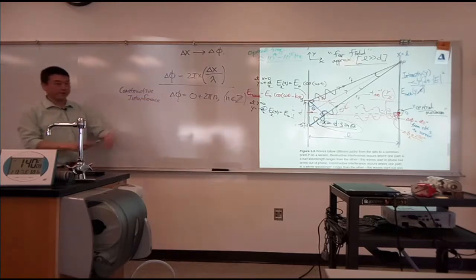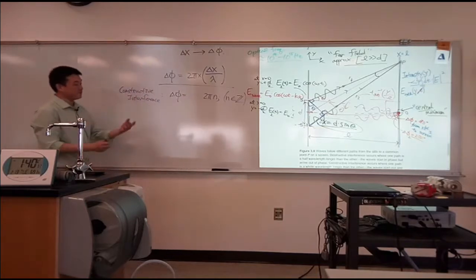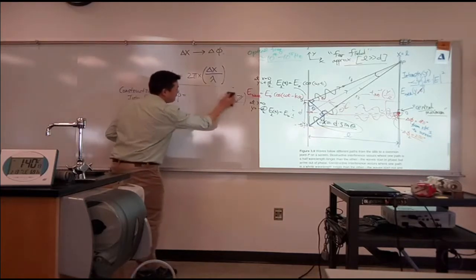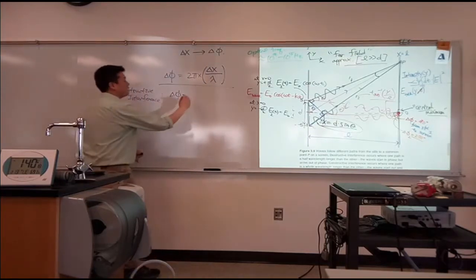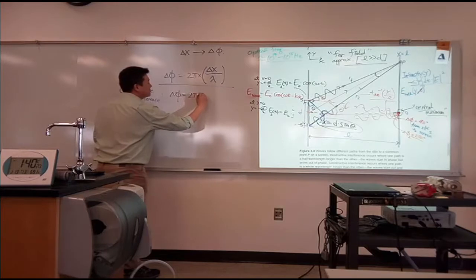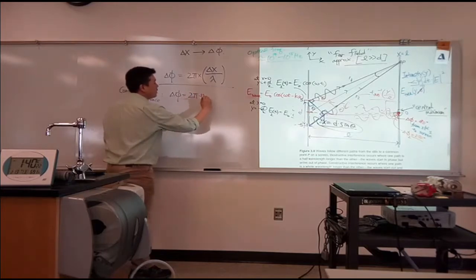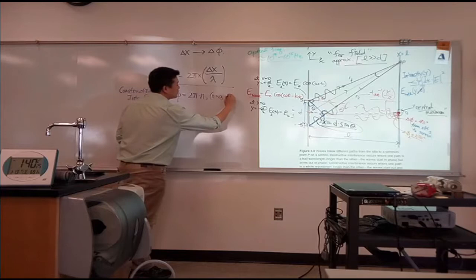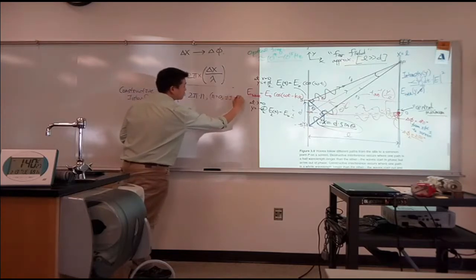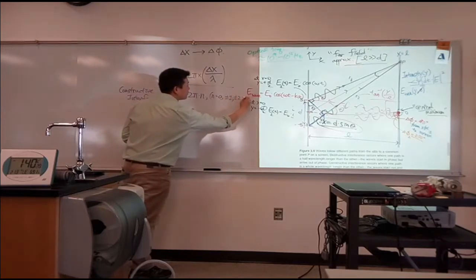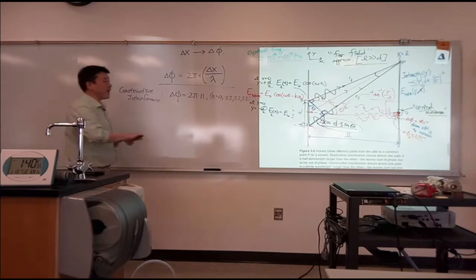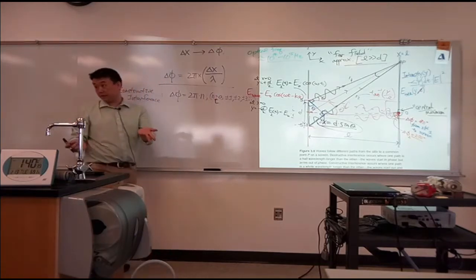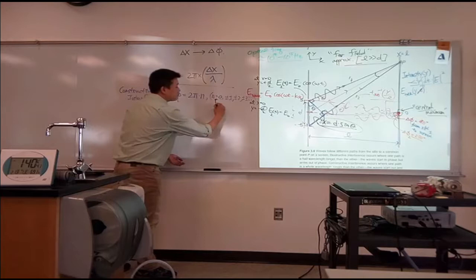So that's the constructive interference. So we don't actually need that zero there. But so let me actually rewrite it in a way that's more understandable. So we can say φ is equal to 2π times n, where n can go from zero, plus minus one, plus minus two, plus minus three, and so on. Okay?